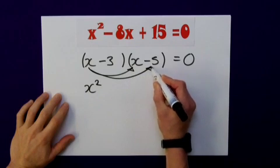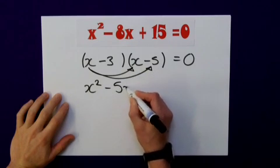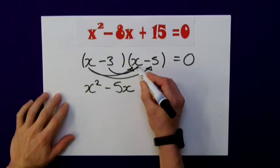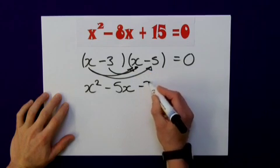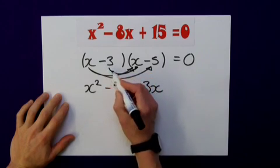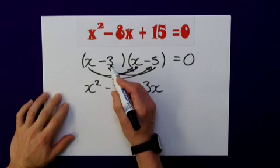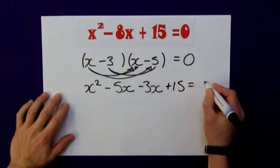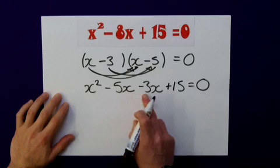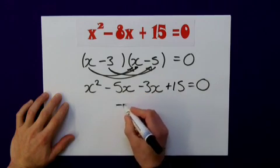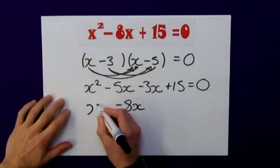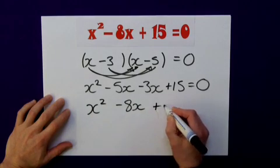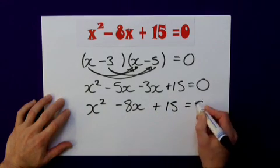x times minus 5 is minus 5x. Now here on this side, minus 3 times x is minus 3x. Now a minus times a minus is a positive. Minus 3 times minus 5 is a plus 15 equals zero. Minus 5x minus the 3x, well that will give me my minus 8x which is what I need there. I've still got my x squared and my plus 15 is equal to zero.